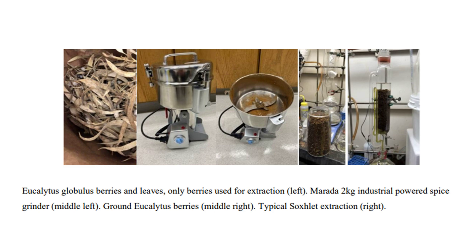It is interesting to note that the researchers collected the fruit of Eucalyptus globulus and performed the extraction of aromadendrane themselves, as they found that commercial supplies were limited due to the pandemic, and the eucalyptus oils that they could purchase contained very small amounts of the desired molecule.